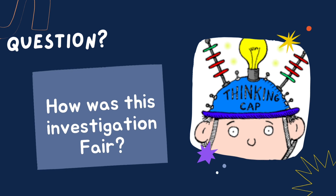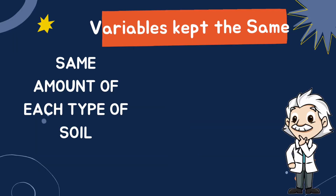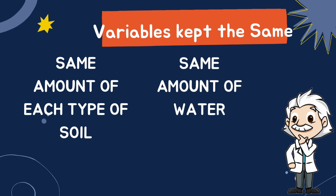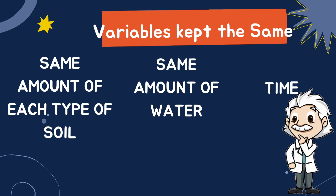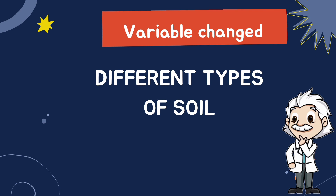How was this investigation fair? As we remember, in a fair test all variables are kept the same except one variable which is changed. The variables that were kept the same were: number one, the same amount of each type of soil; two, the same amount of water; three, the time. These three things were kept the same. So what is the variable that was changed in this investigation to make it a fair test? It is the different types of soil — clay, loamy, and sandy.